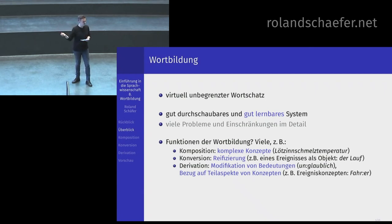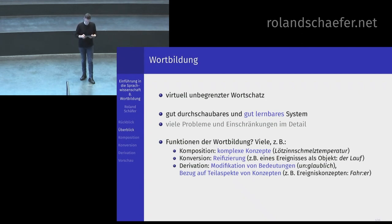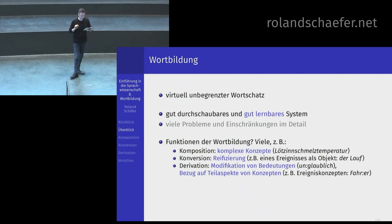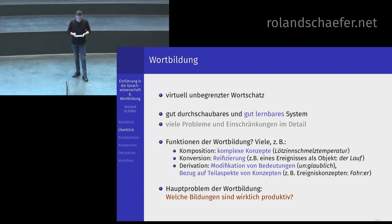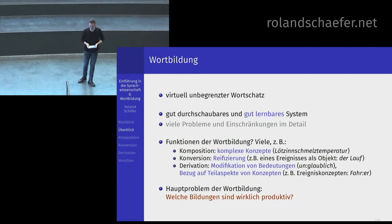Bei Derivation haben Sie Modifikationen von Bedeutungen, zum Beispiel: unglaublich – das Un ist Derivation, Sie hängen was dran oder stellen was davor. Das modifiziert die Bedeutung von glaublich – wobei: glaublich gibt es gar nicht. Das ist genau der Punkt, da kommen wir noch drauf. Oder Sie beziehen sich auf Teilaspekte von Konzepten: wenn Sie Fahrer sagen, nehmen Sie das Verb fahren und hängen eine Endung dran, die ein Substantiv daraus macht, und fokussieren auf den Teilaspekt, nämlich dass da irgendjemand am Steuer sitzt. Das Hauptproblem der Wortbildung ist die Frage, welche Bildungen überhaupt produktiv sind.